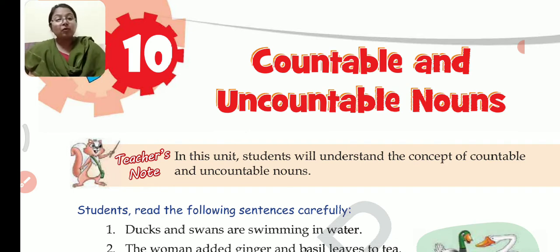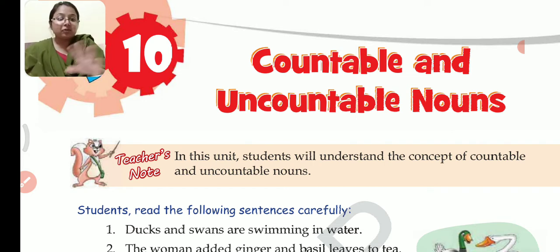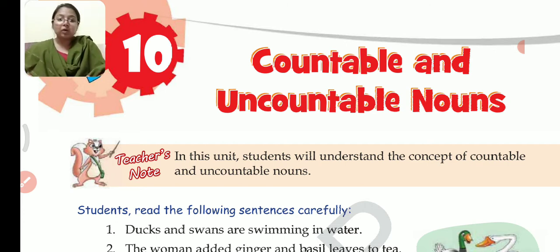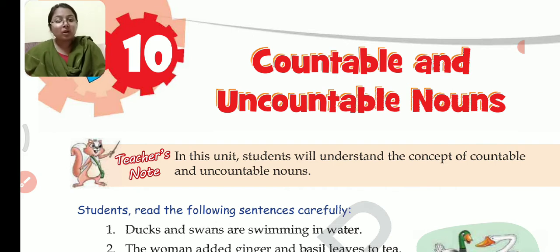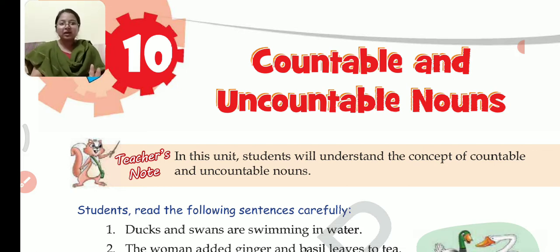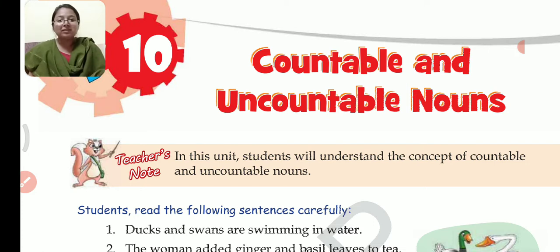I hope the concept of countable and uncountable nouns is clear to everybody. Now, one more point so that you can differentiate between countable and uncountable. We cannot make plural of uncountable nouns. For example, sugar — do we say sugars? No, we say sugar only. Salt — do we say salts? No. Hair — hairs? No, that is wrong. So we cannot make plural of uncountable nouns. We can only make plural of countable nouns — chairs, tables, pens, erasers, pencils, mobile phones, laptops. Plural can be made of countable, but plural cannot be made of uncountable nouns.